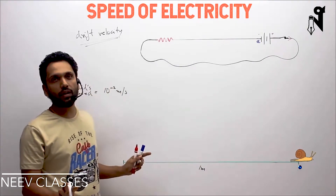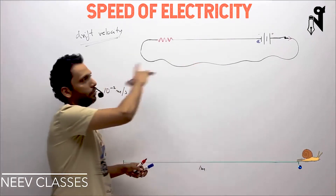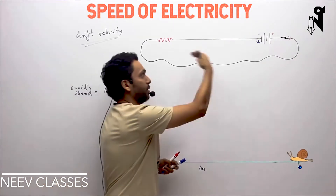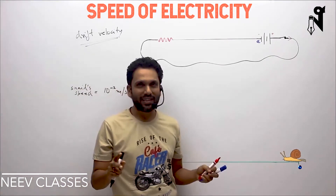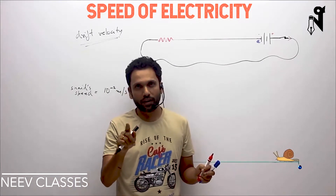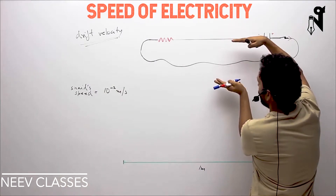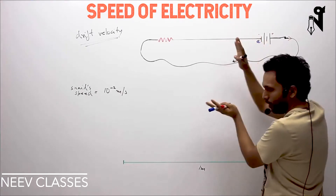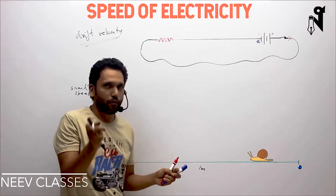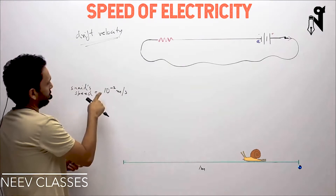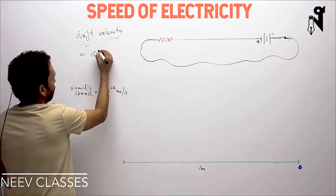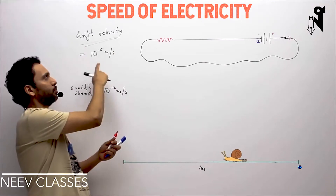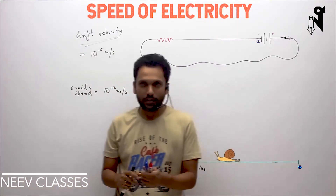1,200 minutes is 20 hours, so 1,500 minutes is more than a day. The electron is going to take more than a day to cover a one-meter wire. That's for DC current, where the electron goes in the same direction all the time. In AC — alternating current — the direction keeps changing, so the electron moves forward, then backward, forward and back, effectively going nowhere. The drift velocity in AC is in the range of 10 to the power minus 5 meters per second.